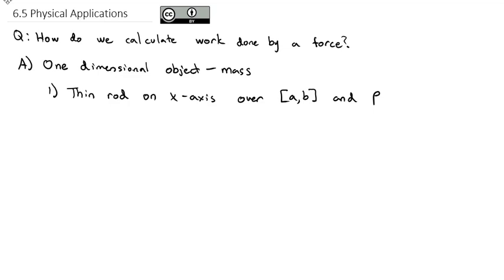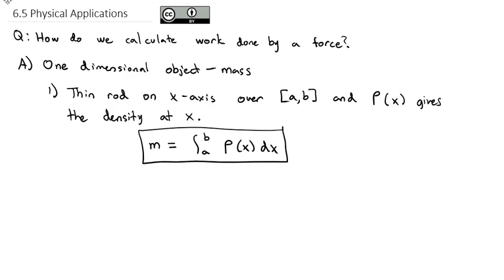Rho (ρ), that's a Greek letter that looks kind of like a P, ρ(x) gives the density of this rod at point x. The mass of this rod is the integral from a to b of the density ρ(x) dx. So the mass of a one-dimensional object is simply the integral of the density function.